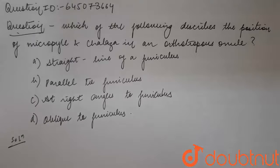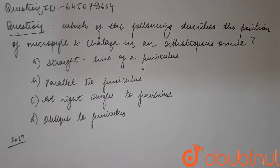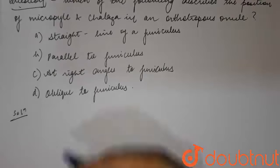Students, we have this question: which of the following describes the position of micropyle or chalaza in the orthotropous ovule? Option A: straight line of a funicular. Option B: parallel to funicular. Option C: right angle to funicular. And option D: oblique to funicular.